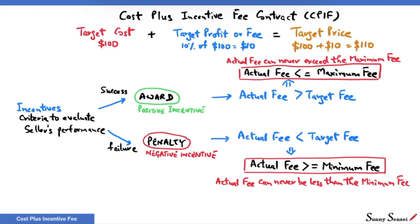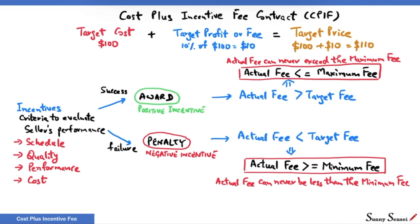This is unlike FPIF contracts, where the limit is on the price. The price in FPIF cannot be more than the ceiling price, and there is no lower limit on price in FPIF contracts. Criteria in CPIF are similar to what we have in the FPIF contract — these can be designed to control various parameters: schedule, quality, performance, or cost. When cost is the criteria, just like FPIF, a share ratio is often used. Have a look at my earlier lesson on fixed price incentive fee contracts to better understand the similarities and differences between FPIF and CPIF contracts.